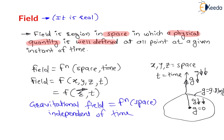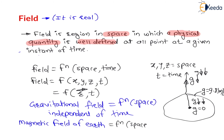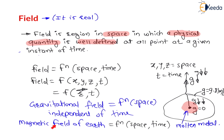Now let us understand another example: the magnetic field of earth. This magnetic field of earth is a function of both space (x, y, z) as well as time t. The magnetic field is generated because of the molten metal present at the earth's core — the center of earth. Slowly, with respect to time, this molten metal is solidifying, meaning the molten metal is decreasing. Therefore this magnetic field is also decreasing slowly with respect to time. So the magnetic field of earth is dependent on time as well.